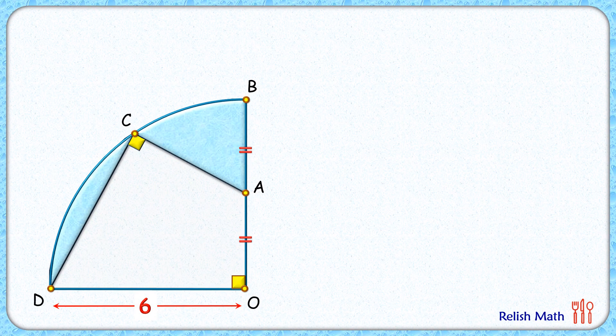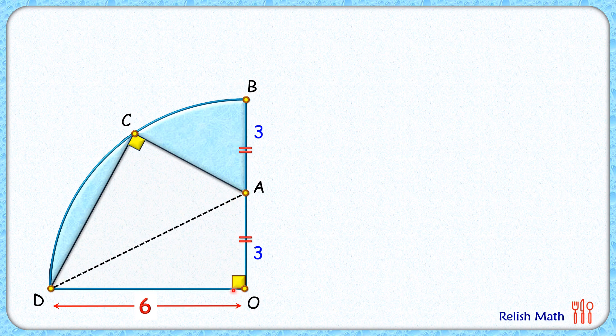Let's check this simple and elegant solution. Here A is the midpoint, thus BA and AO are 3 cm each. Let's join DA here. Now in this right angle triangle, applying Pythagoras theorem, we will get DA length as 3 root 5 cm.